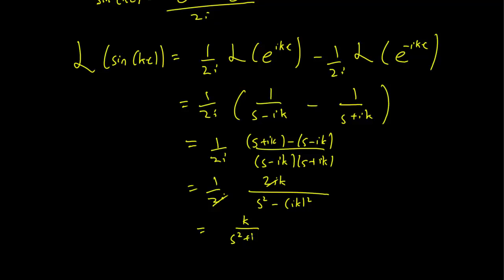So this is just going to be k over s squared plus k squared, bearing in mind that i squared is equal to minus 1.